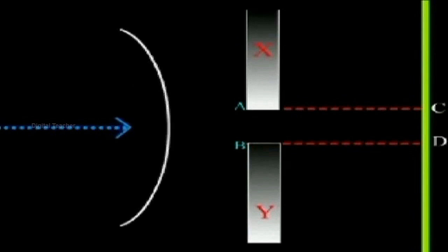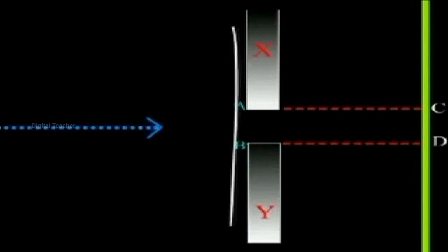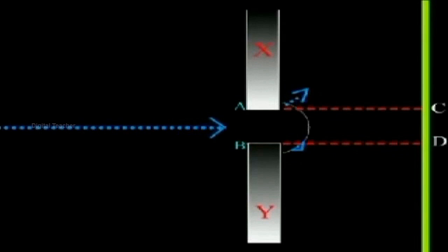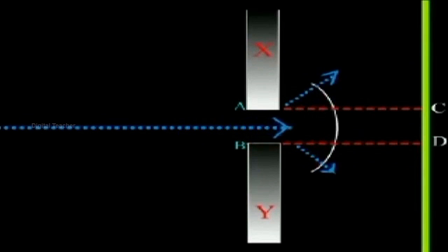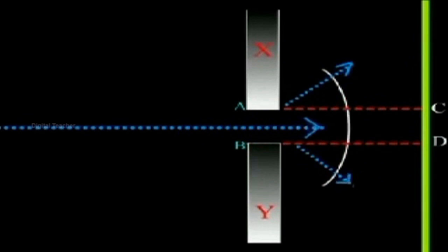This phenomenon is called diffraction. The bending of a wave or its deviation from the original direction of propagation when it meets a small obstacle is called diffraction.